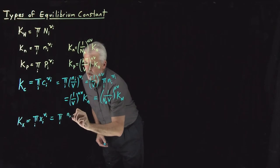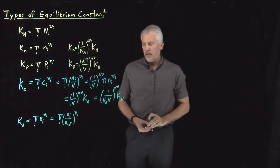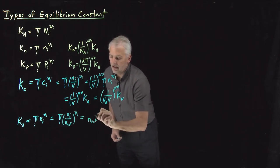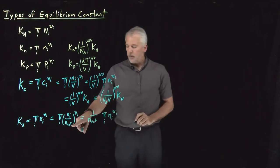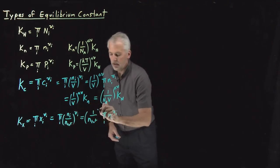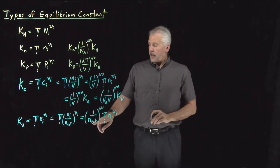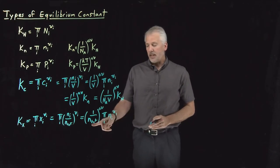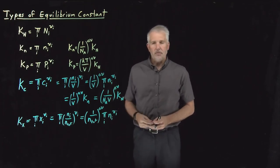Mole fractions are just moles of each species divided by the total number of moles. As usual, I can leave the species-specific term inside the product and pull out 1/N_total — it comes out as (1/N_total)^Δν. One caveat: the total number of moles is likely changing as the reaction proceeds, so it's not a constant in the same way that Avogadro's number, volume, or temperature might be.